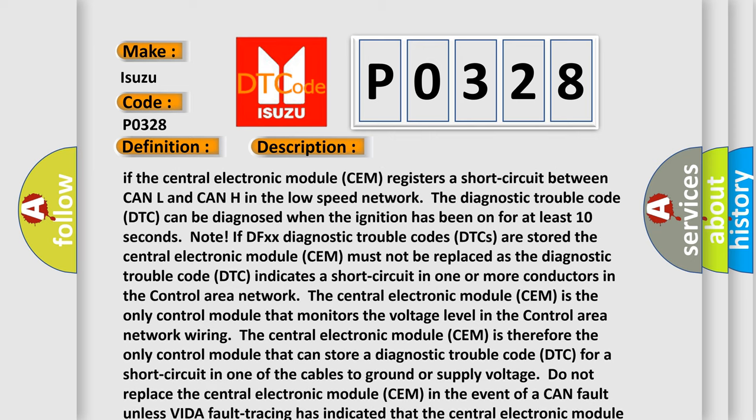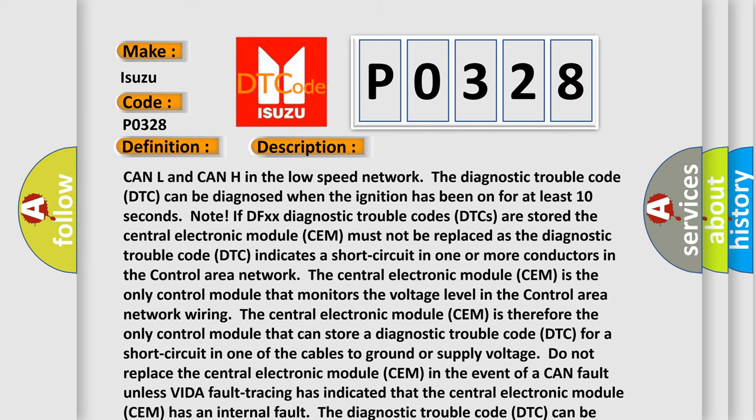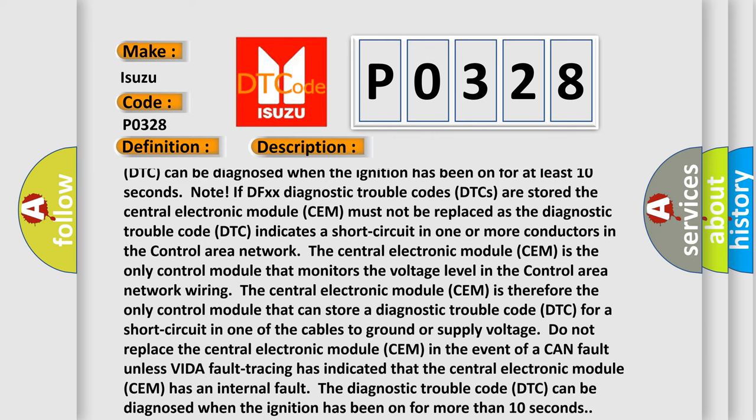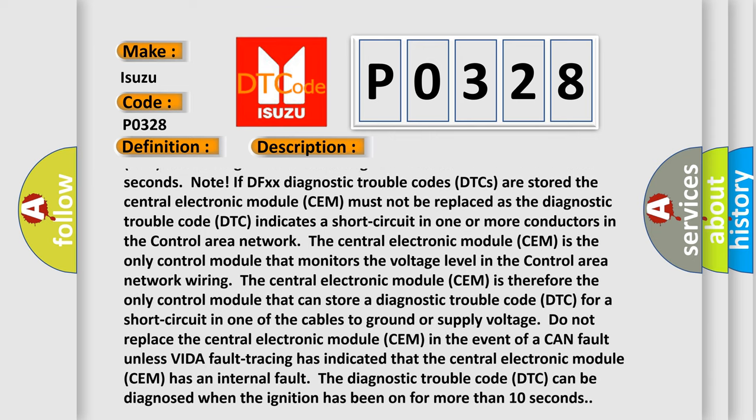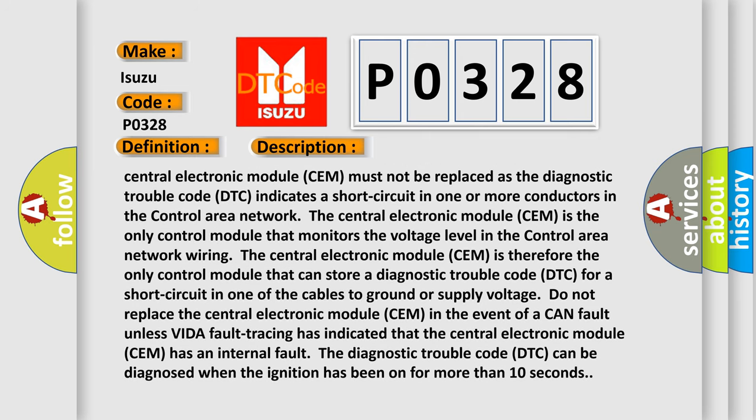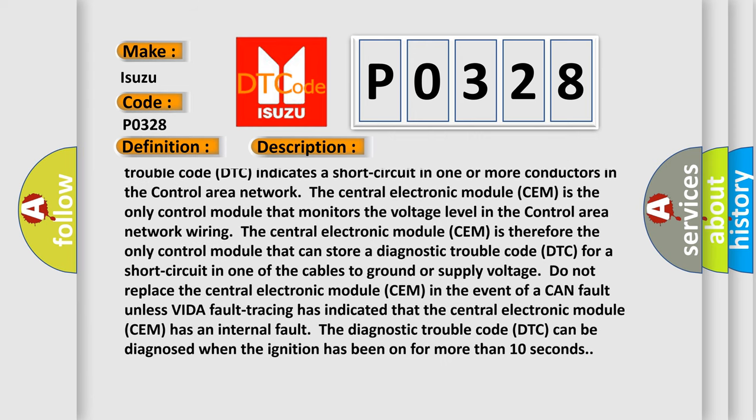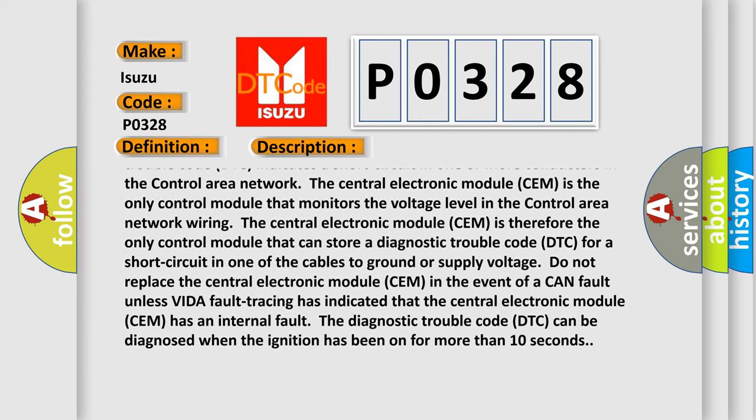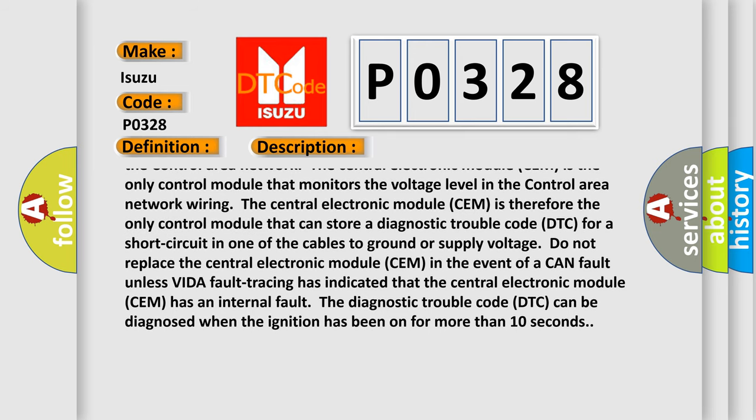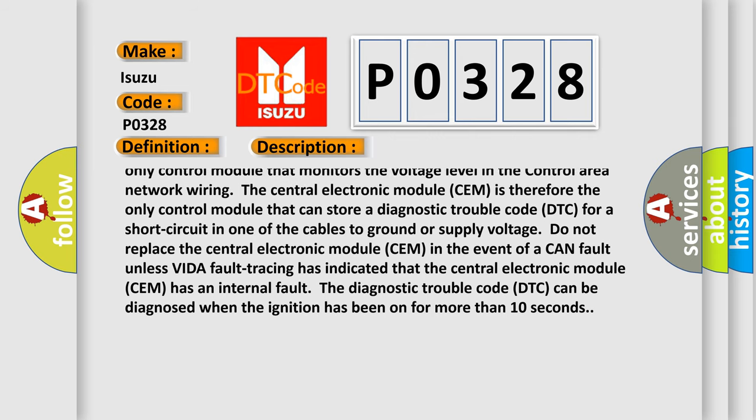As note, if DFXX diagnostic trouble codes DTCs are stored, the central electronic module CEM must not be replaced as the diagnostic trouble code DTC indicates a short circuit in one or more conductors in the control area network. The central electronic module CEM is therefore the only control module that can store a diagnostic trouble code DTC for a short circuit in one of the cables to ground or supply voltage.